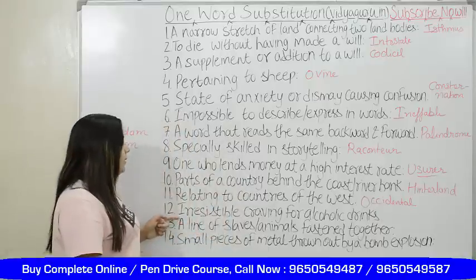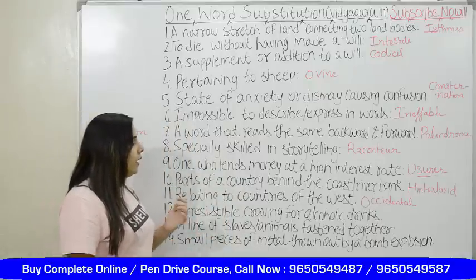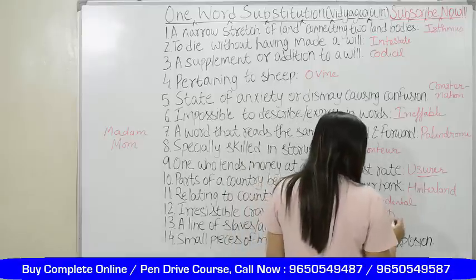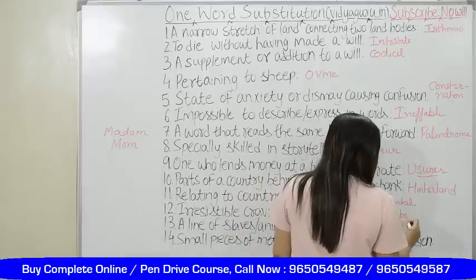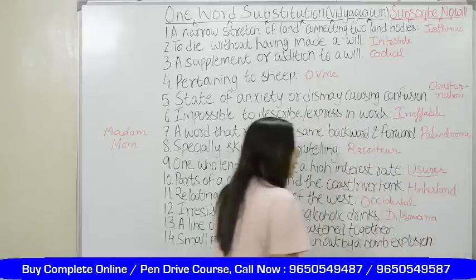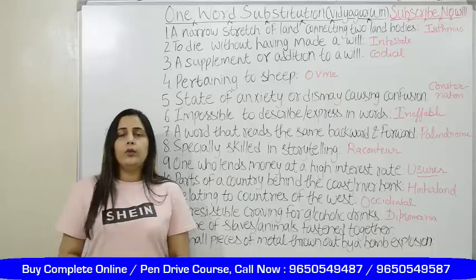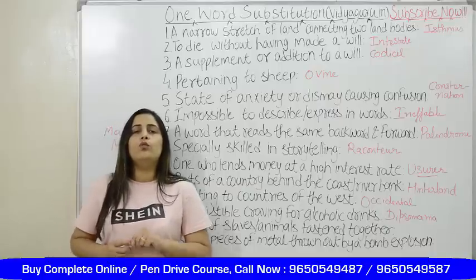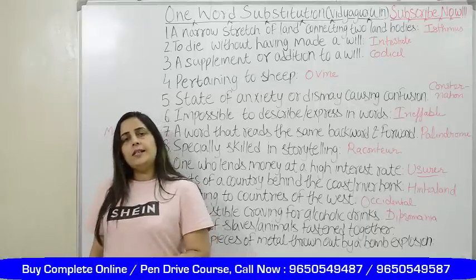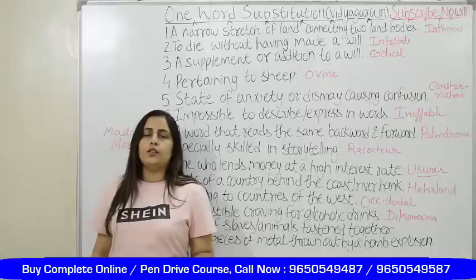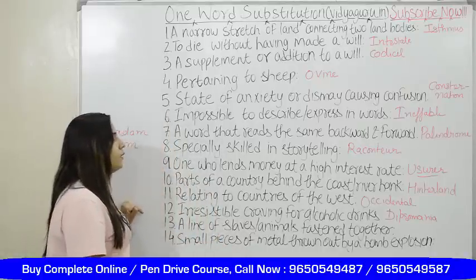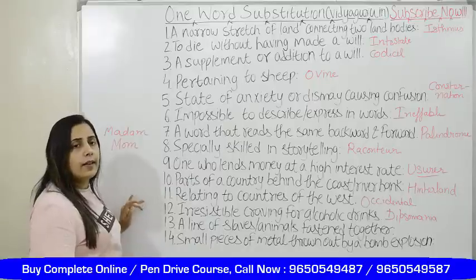Irresistible craving for alcoholic drinks — that is called dipsomania. A person who consumes excessive alcoholic drinks — that is also dipsomania. If a person has a craving for alcoholic drinks, that is also dipsomania. So dipsomania is that irresistible craving for alcoholic drinks.